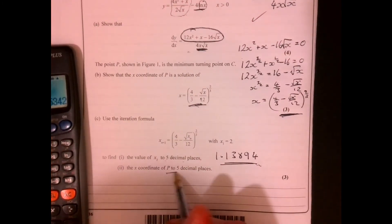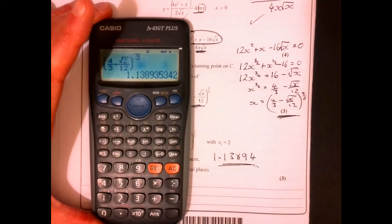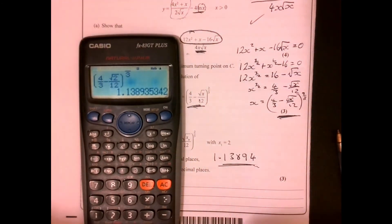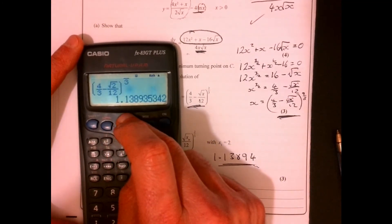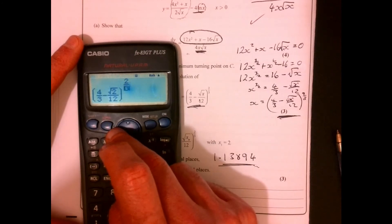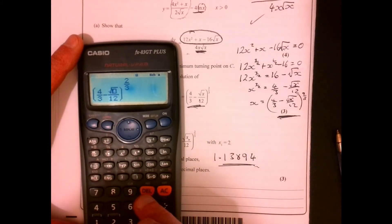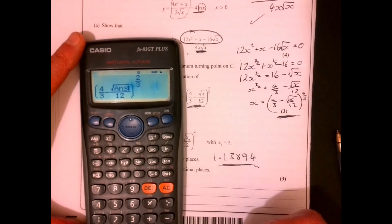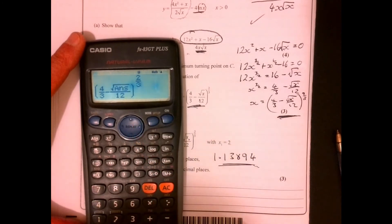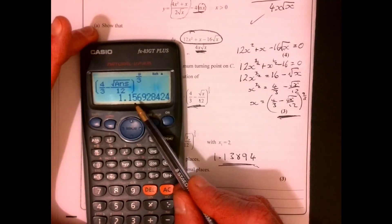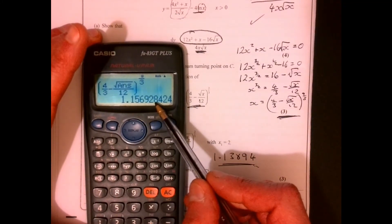Okay, now we want to get the x coordinate of P to five decimal places, so we just need to keep repeating this until at five decimal places it doesn't change. Now the easiest thing to do, you could just keep feeding these numbers in, but the easiest thing to do is just to use your calculator in a sensible way. Look, you can go back up and you can change that 2 to whatever the previous answer was. And if you just do that, look at what's going to happen. If I do that again, it's just going to save me so much bother. And I don't need to necessarily go and write all of these down. I'm looking for where it doesn't change at five decimal places.